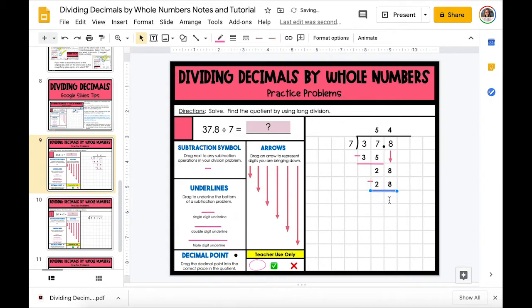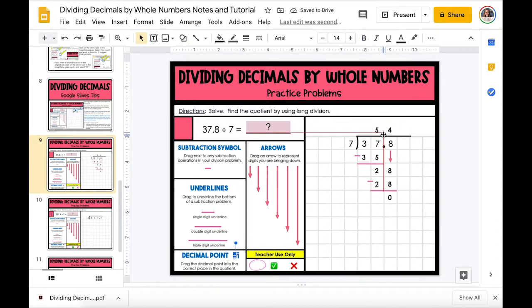We have zero as our remainder, and then at the end we are going to just put our decimal straight up into our quotient. And our quotient is five and four tenths.